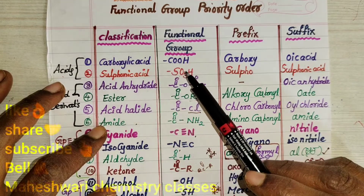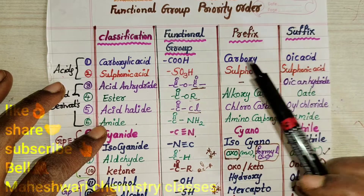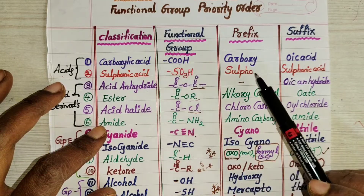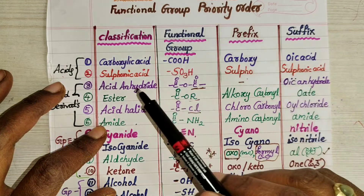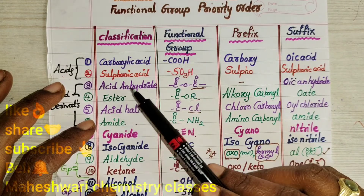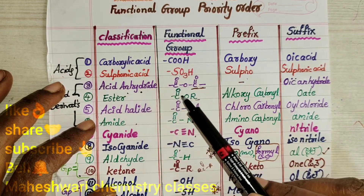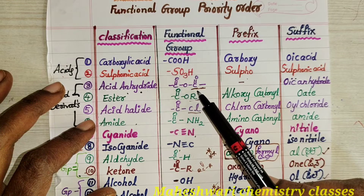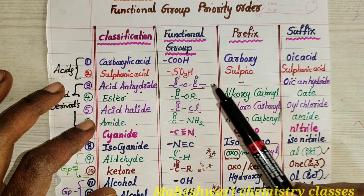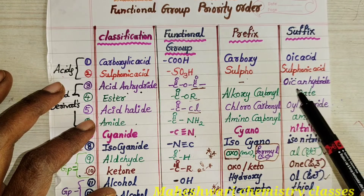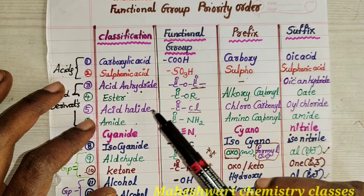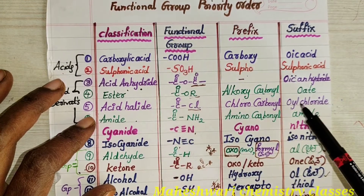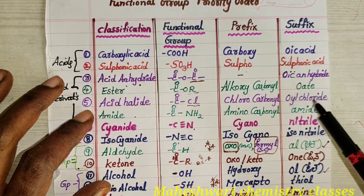Carboxylic acid (COOH): prefix is carboxy, suffix is oic acid. Sulphonic acid (SO3H): prefix is sulpho, suffix is sulphonic acid. Acid prefix is not given; suffix is oic. Anhydride, ester (C=O bond OR): prefix is alkoxycarbonyl.